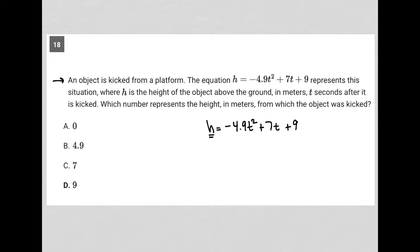The height from which the object is kicked is code for t = 0, right? Because if we're focusing on the height before the object is even kicked, that means no time has elapsed.